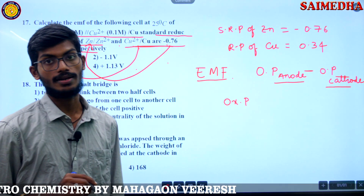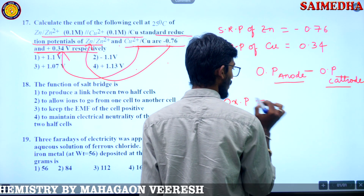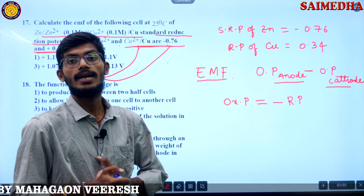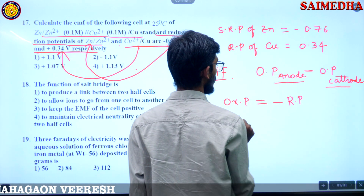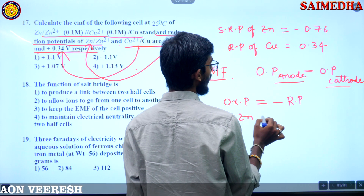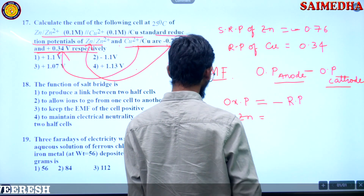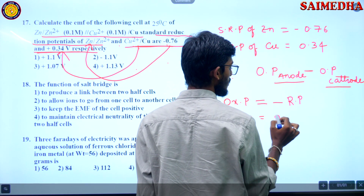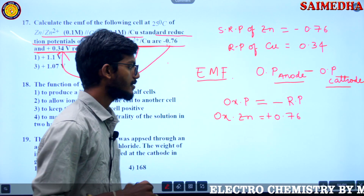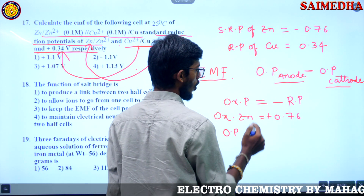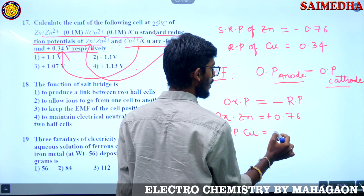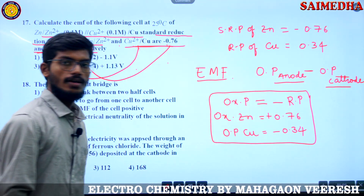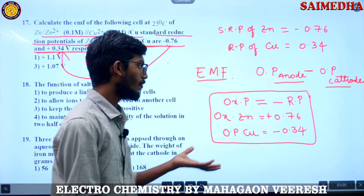The relation between oxidation potential and reduction potential is: oxidation potential equals negative of reduction potential. So the oxidation potential of zinc is the negative of minus 0.76, which is plus 0.76. The oxidation potential of copper is negative of 0.34, which is minus 0.34.